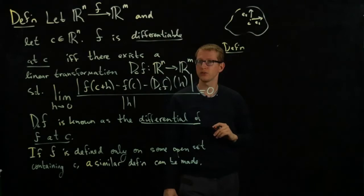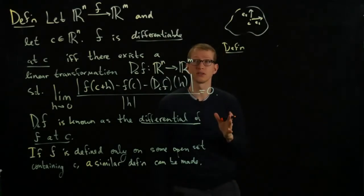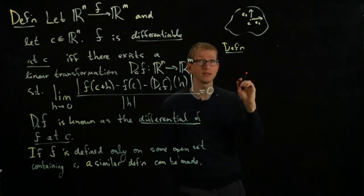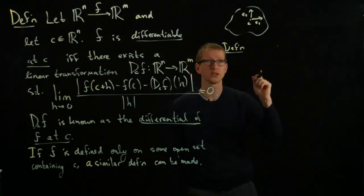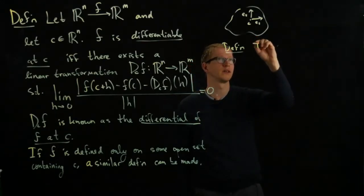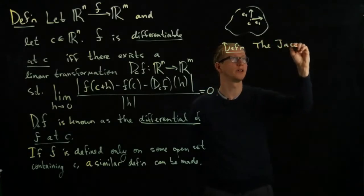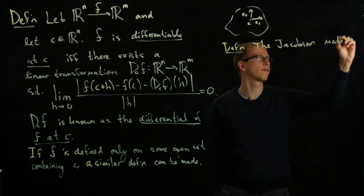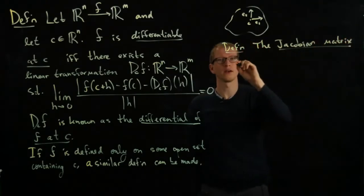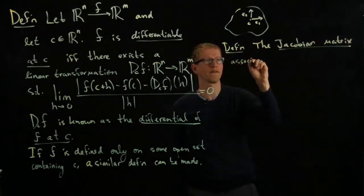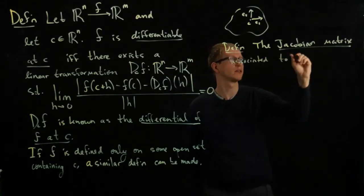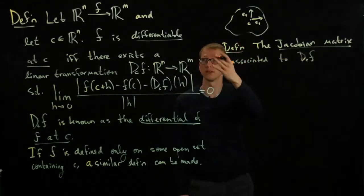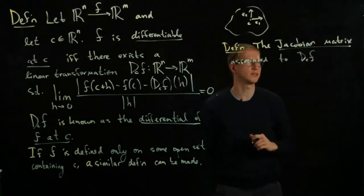Now, using this, we can actually write down a matrix associated to the differential at C using this basis. And that matrix is called the Jacobian. So the Jacobian matrix associated to the differential of F at C—of course F is a differentiable function at C such as above.